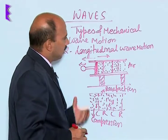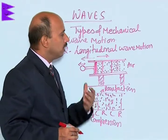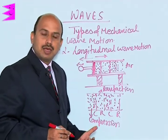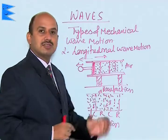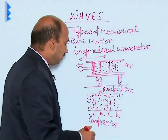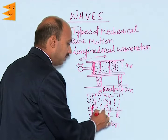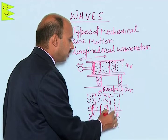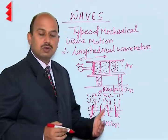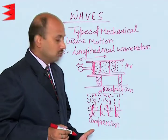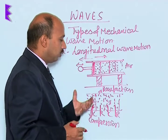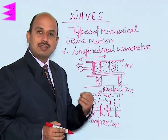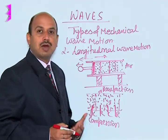During the propagation of a longitudinal wave, there is a change in the density of the medium, resulting in compressions and rarefactions. The distance between two consecutive compressions is equal to the wavelength. Similarly, the distance between two consecutive rarefactions is equal to the wavelength. An example of this type of wave is the sound wave.